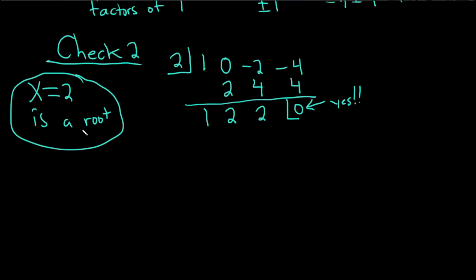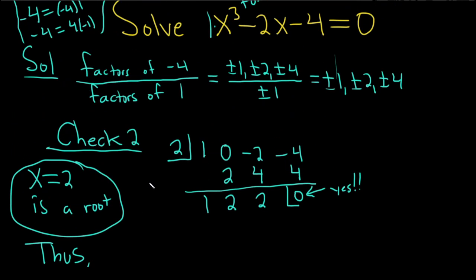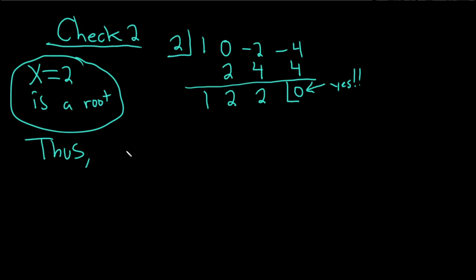So because 2 is a solution, what happens is it tells us that x minus 2 is a factor. So we have our original equation, which was x cubed minus 2x minus 4. And 2 is a root. That means x minus 2 is a factor. And the rest of it is right here because we use division. Start with 1 less. So this is x cubed, so start with x squared. So it's 1 times x squared, or just x squared, plus 2x plus 2. So we've factored our original problem.